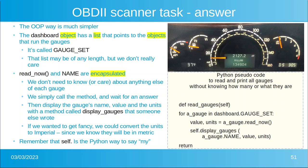We simply call the method, wait for the answer, and then display the gauge's name, value, and units — with a method called display gauges, or maybe one that was written by somebody else. It doesn't matter.